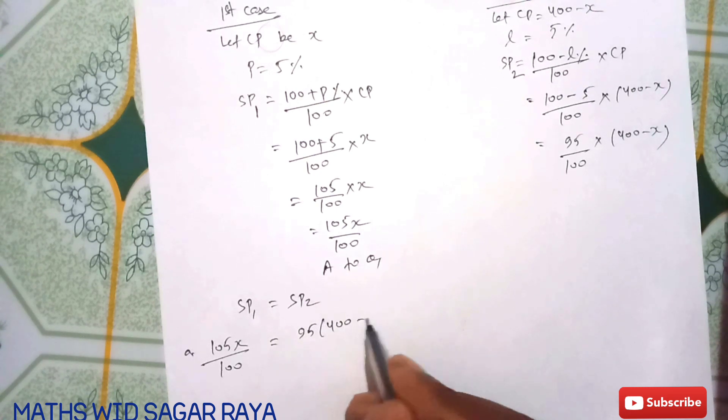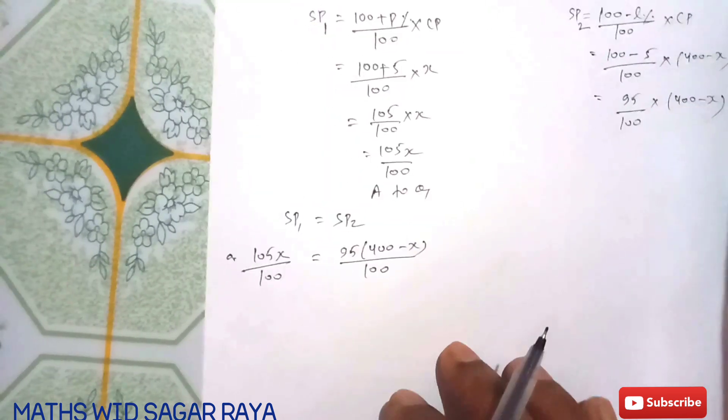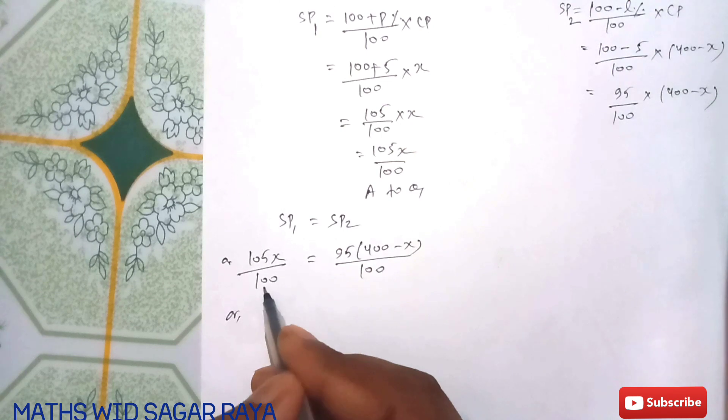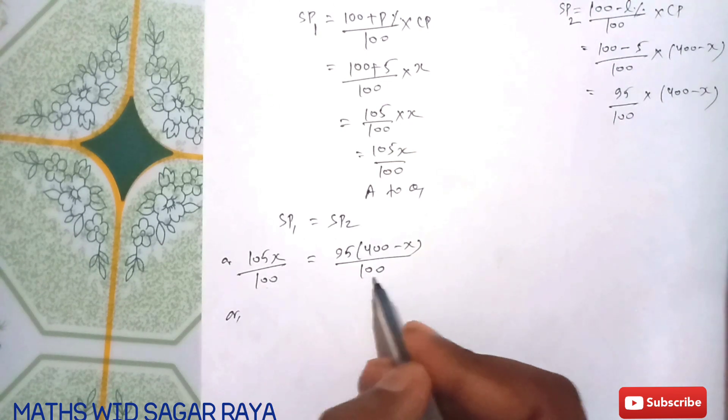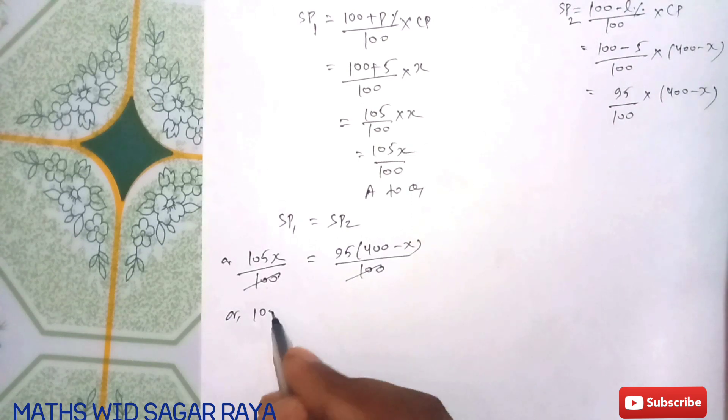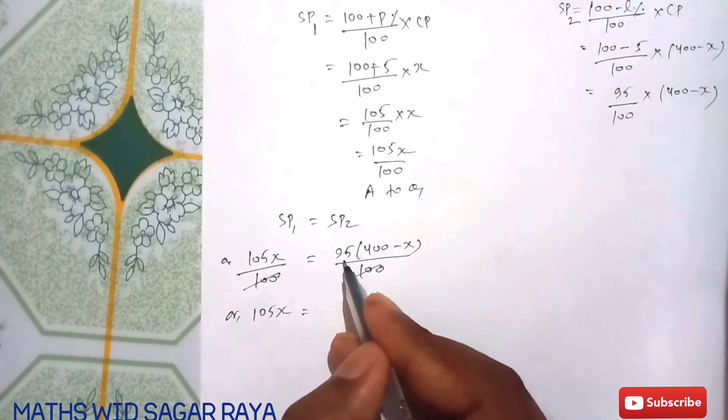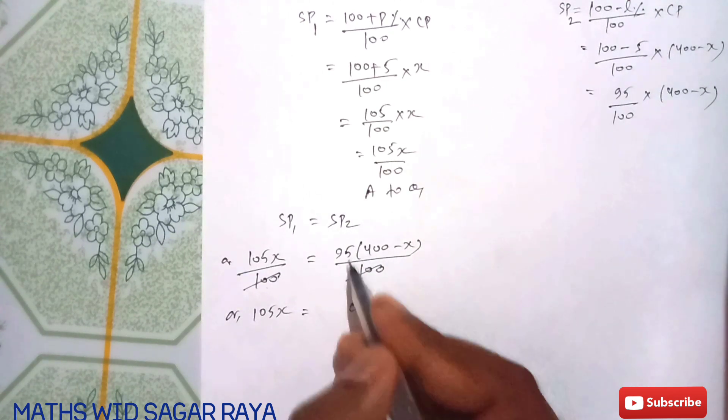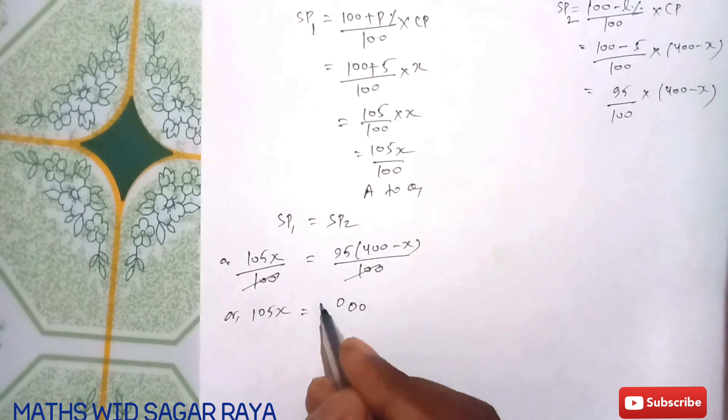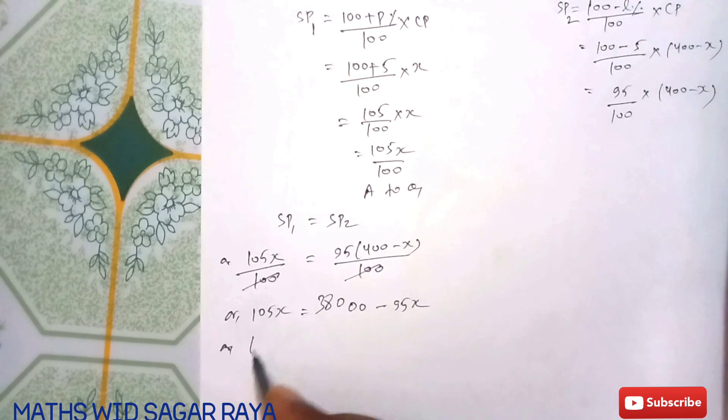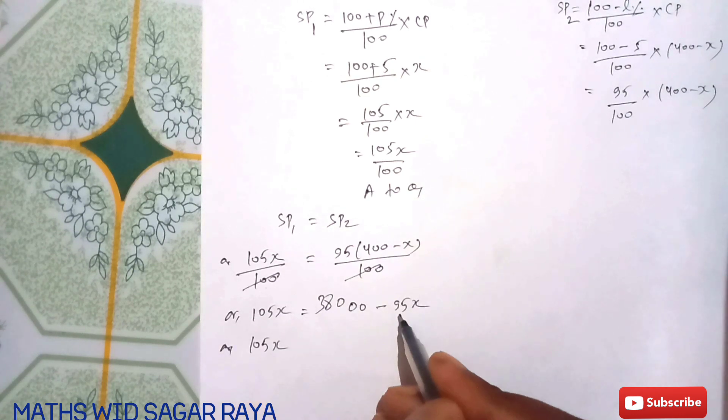Cancel 100 from both sides. 105X = 95 × 400 - 95X. 95 × 400 = 38,000. So 105X = 38,000 - 95X. Bringing -95X to this side: 105X + 95X = 38,000.